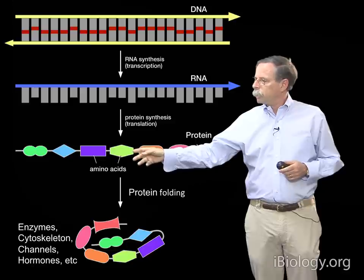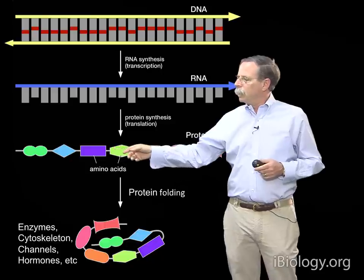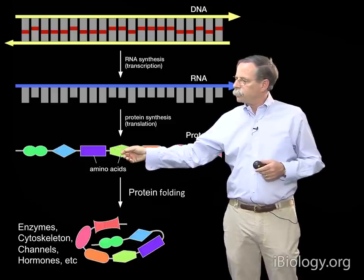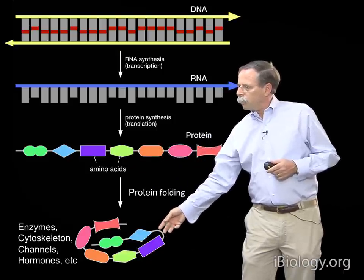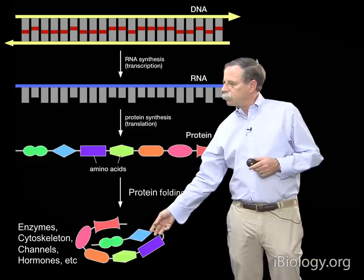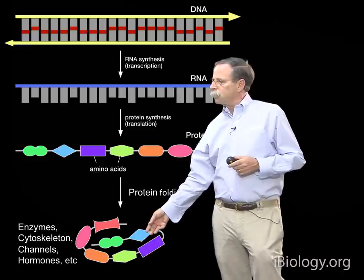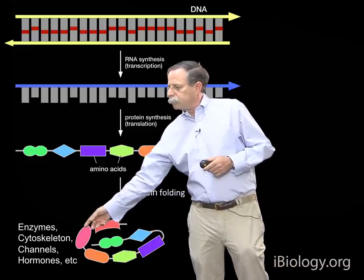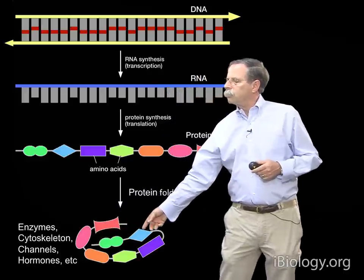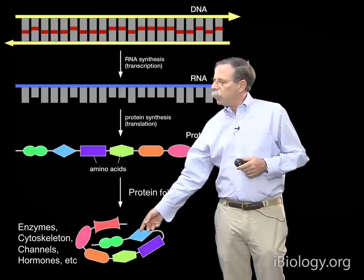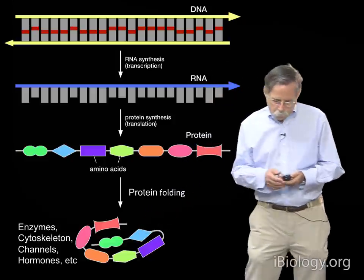For those unfamiliar, polypeptide chains are composed of strings of 20 different amino acids, and the particular sequences of amino acids ultimately dictate a final folded structure that is unique and relatively stable, involved in carrying out cellular functions. For example, enzymes, cytoskeletal components, channels, hormones, receptors, and a large variety of effectors in our cells are uniquely folded polypeptide chains that carry out biological activities.